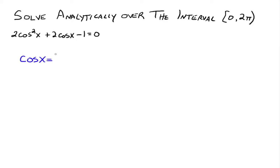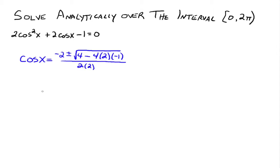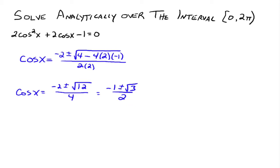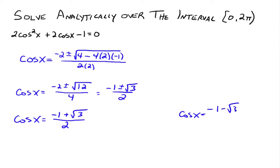So cosine x equals... b is 2, so negative 2 plus or minus the square root of b squared (which is 4) minus 4 times a (which is 2) times c (which is negative 1), all over 2a. That simplifies to negative 2 plus or minus the square root of 12, all over 4, which reduces to negative 1 plus or minus radical 3 over 2. So cosine x equals (negative 1 + √3) / 2 or cosine x equals (negative 1 − √3) / 2.